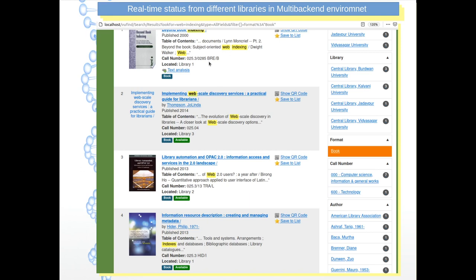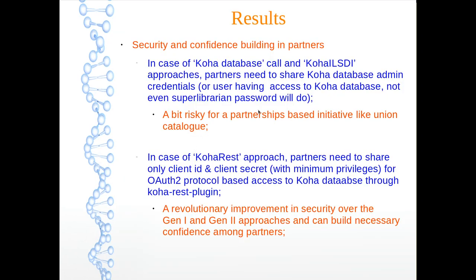After generating the prototype with all 6,000 records, we can now search and see that a particular book — searched by 'web indexing' — is available from library 1, a second copy from library 3, and a third from library 2. Real-time item availability status is also generated. Regarding security and confidence building among partners: for Koha database call and Koha ILSDI approach, partners need to share Koha database admin credentials — a bit risky for a partnership-based initiative like a union catalog. But for Koha REST, we only share the client ID and client secret, and that user has minimum privileges — not a security threat. It is a revolutionary improvement in security over generation 1 and generation 2 approaches.